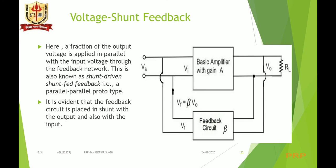Voltage shunt feedback: the block diagram shows that the sample taken from the output side is in parallel — meaning voltage is sampled — and is given to the feedback circuit. The feedback circuit produces Vf = β·Vout, which is also applied to the input side in parallel. So output sampling is parallel and input mixing is also parallel, meaning the feedback circuit is connected in parallel with both the output and the input. It is also called shunt-driven shunt-fed feedback.